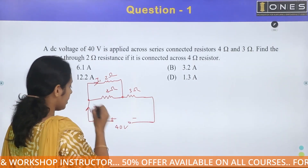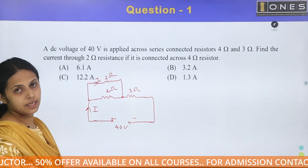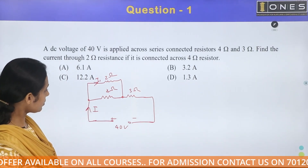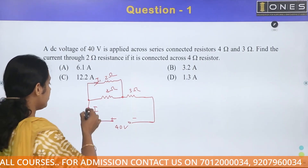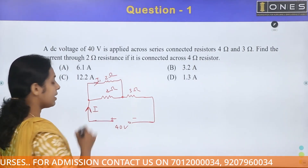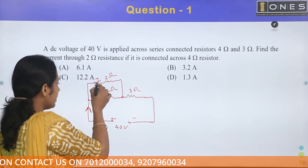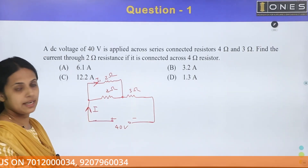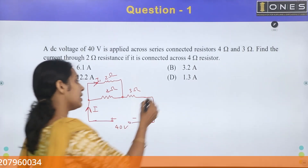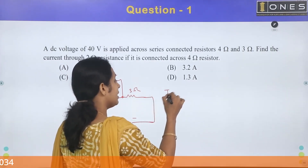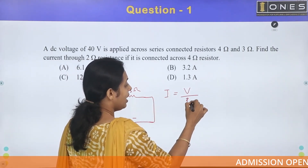Let the net current be I, and we need to calculate I1. First, we calculate the net current I, then apply the current division rule to easily get the I1 value. The net current I equals V divided by the effective resistance.